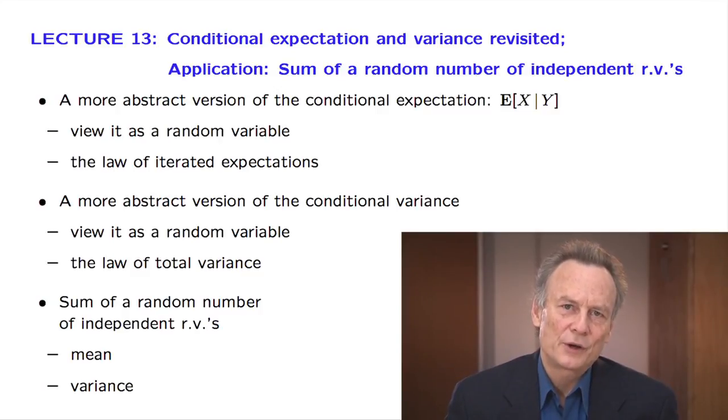After doing all this, we will follow a similar program for the conditional variance. Once more, we will see that it can be viewed as a random variable and then we will relate its expected value with the unconditional variance. This will be the so-called law of total variance.